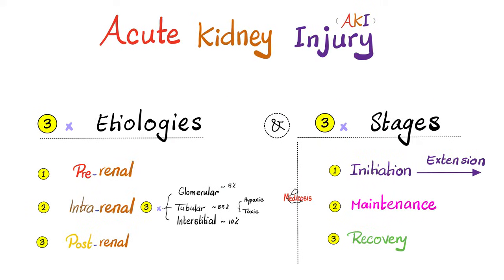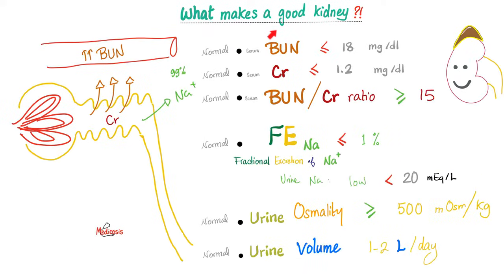Acute kidney injury has three causes: pre-renal, intrarenal, and post-renal. The intrarenal category has three sub-causes and three stages: initiation, maintenance, and recovery. Why does intrarenal have three causes? Because the problem could be in the glomerulus, in the tubule, or in the interstitium. Tubular damage is the most common cause of intrarenal azotemia — this is acute tubular necrosis. A good kidney excretes waste, keeping less BUN and creatinine in the blood, with a BUN-to-creatinine ratio greater than 15.